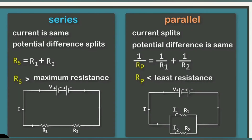Let us see the difference between series and parallel combination. In series combination, current is the same, but in parallel combination, current splits. In series combination, potential difference splits, but in parallel combination, potential difference is the same. The equation for series combination is Rs equal to R1 plus R2, and for parallel combination, 1 by Rp is equal to 1 by R1 plus 1 by R2.